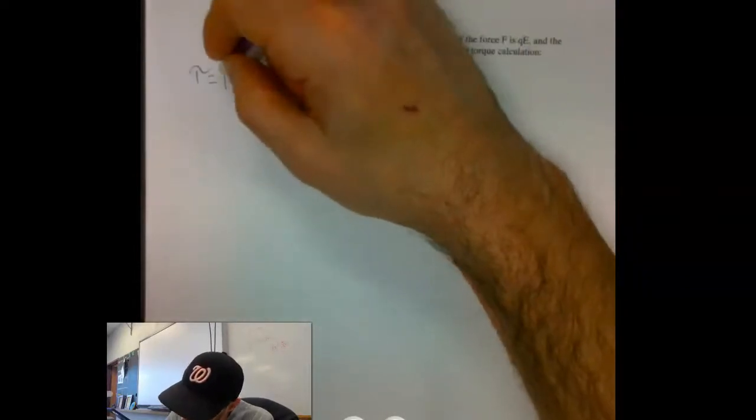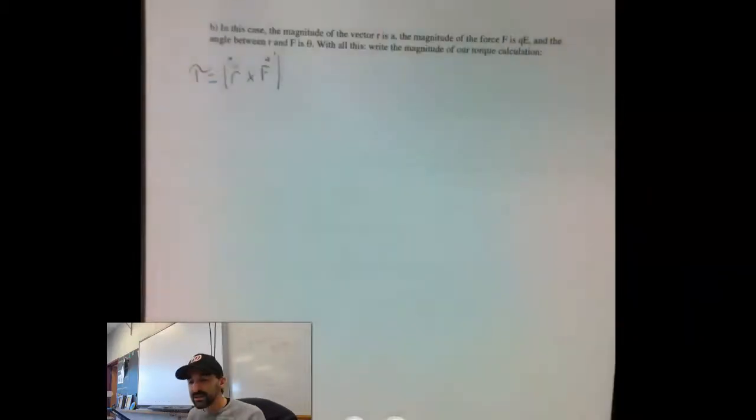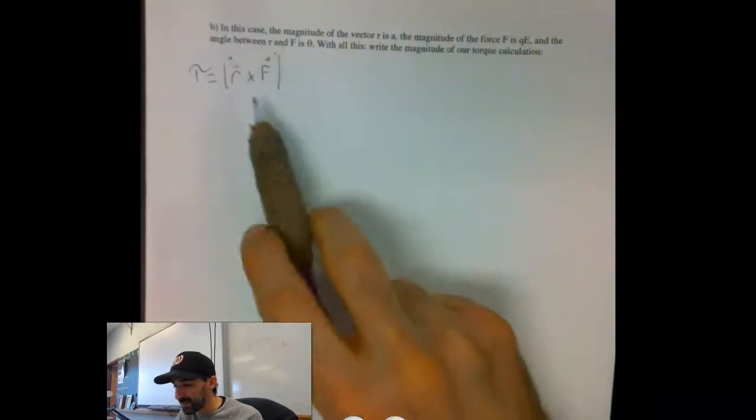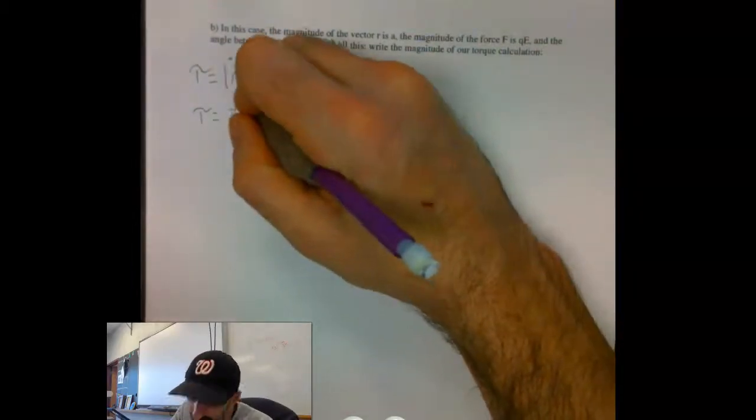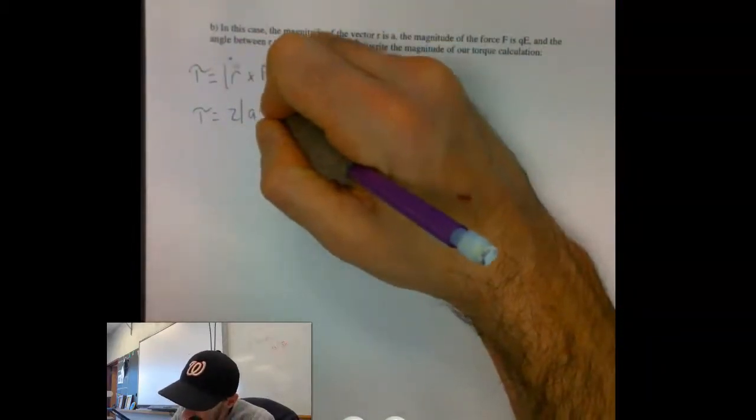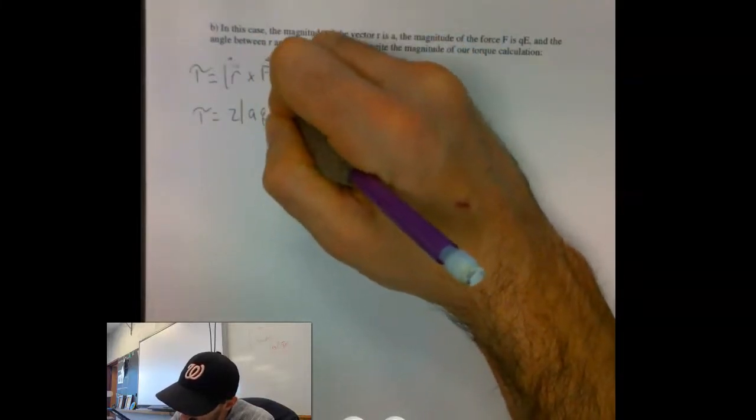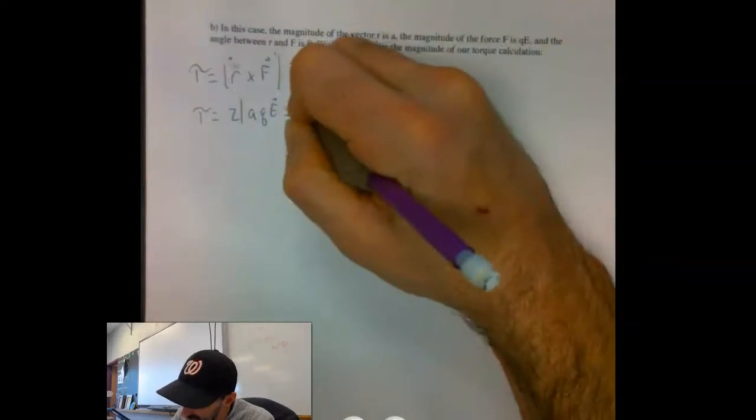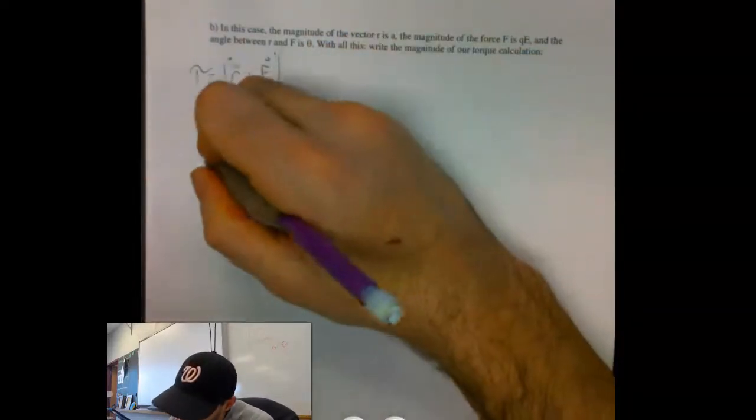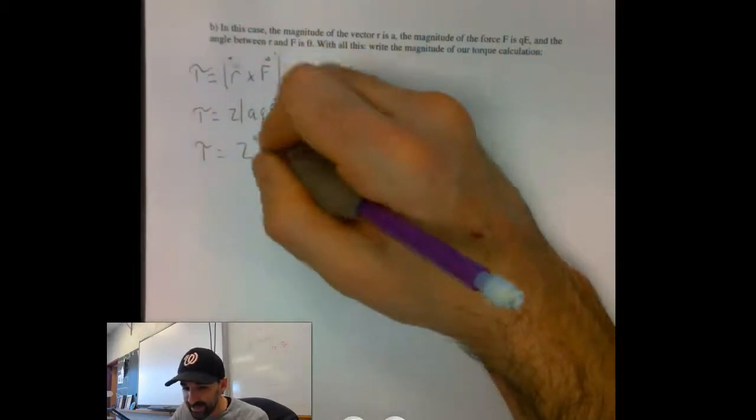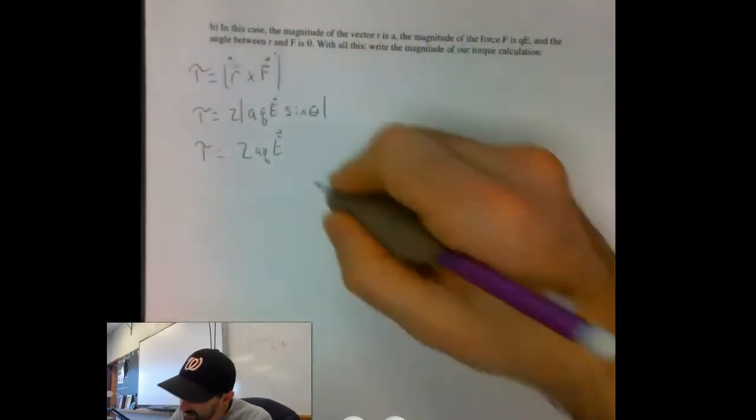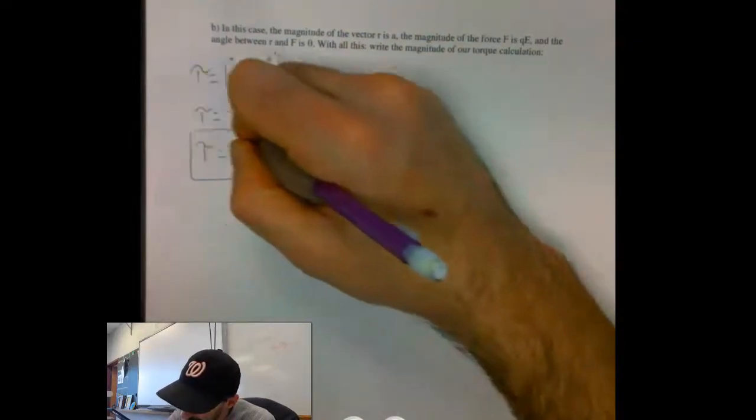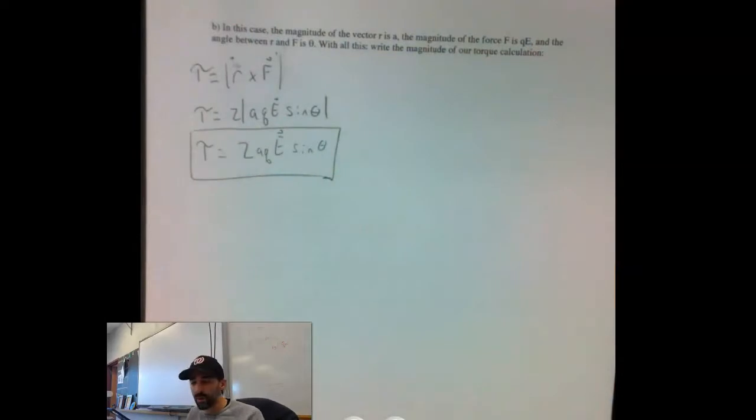That's not supposed to be a parenthesis. So plugging in everything that they're going to ask us to plug in. In this case, the vector R is equal to A. I'm going to say that my torque is equal to two times A times Q E times the sine of the angle in between, times the sine theta. So I know my net torque is equal to two times A times Q E times whatever that value of the electric field is times the sine of the angle in between. That is a general solution for the torque acting on this dipole moment separated by some distance.